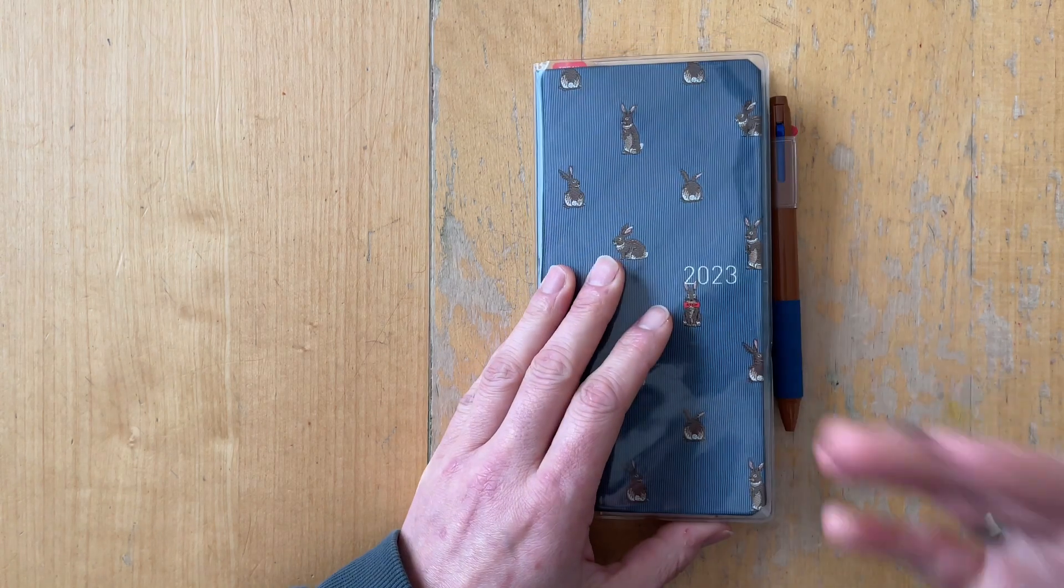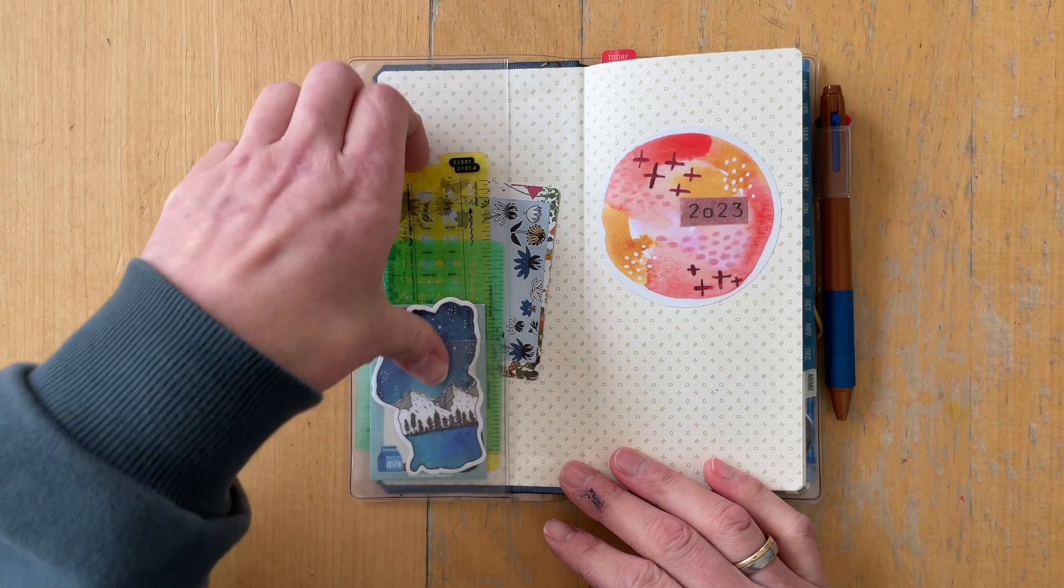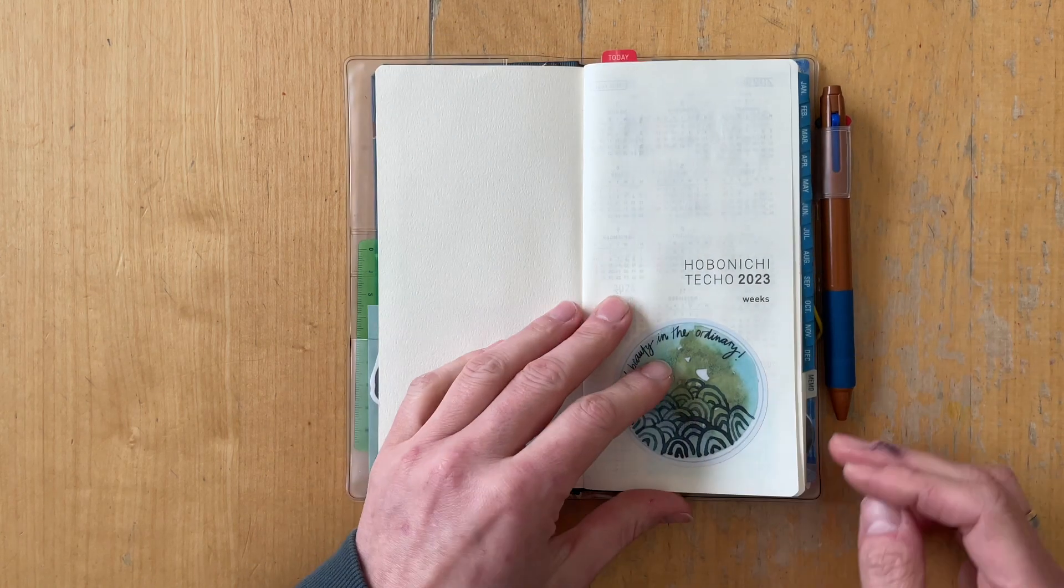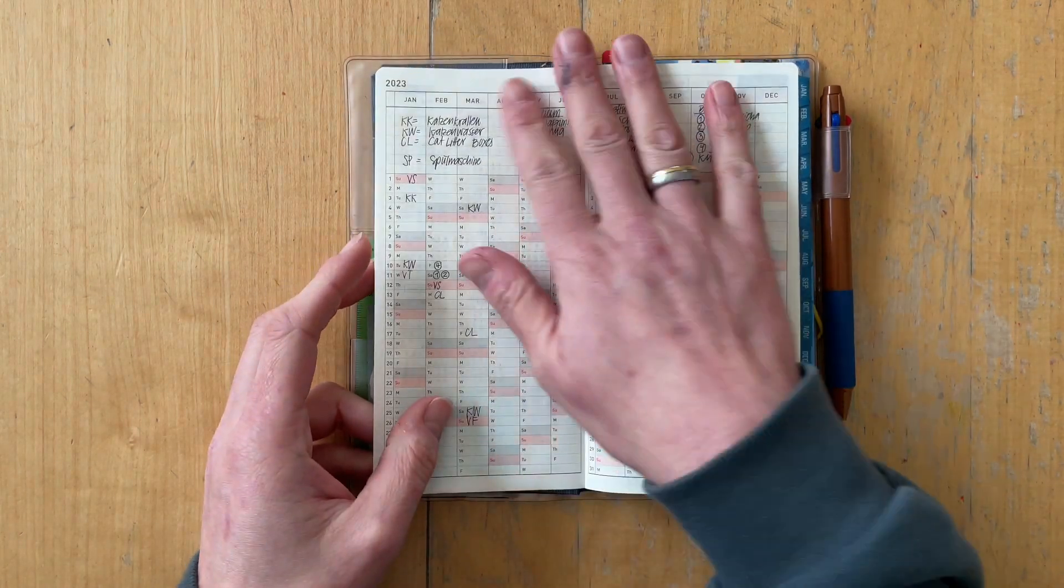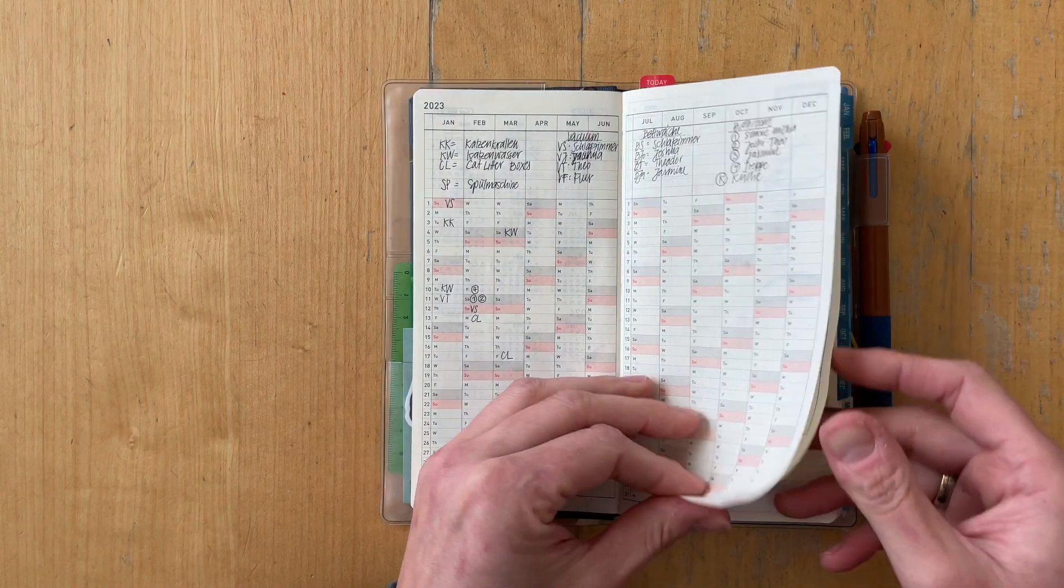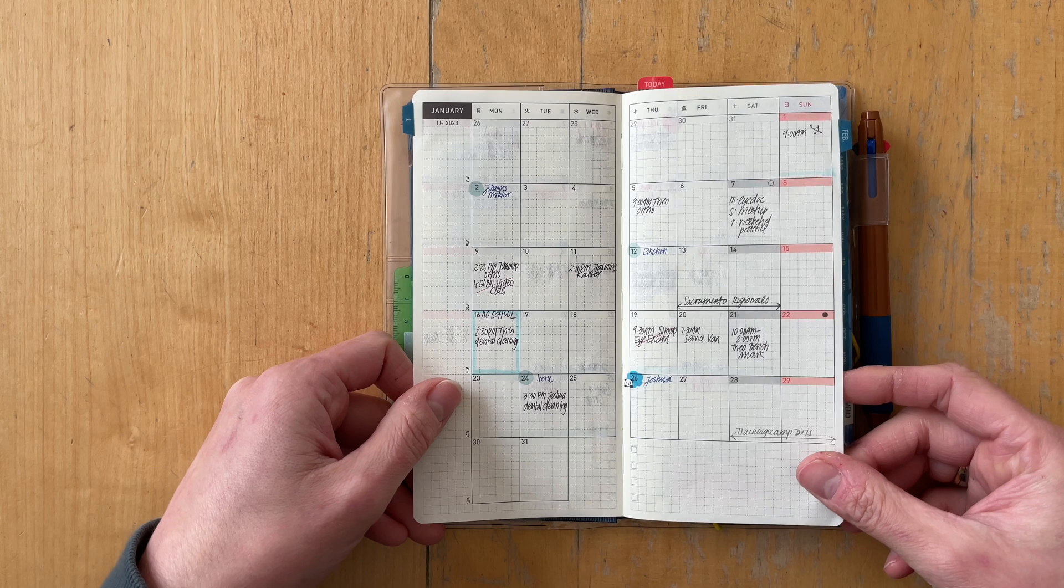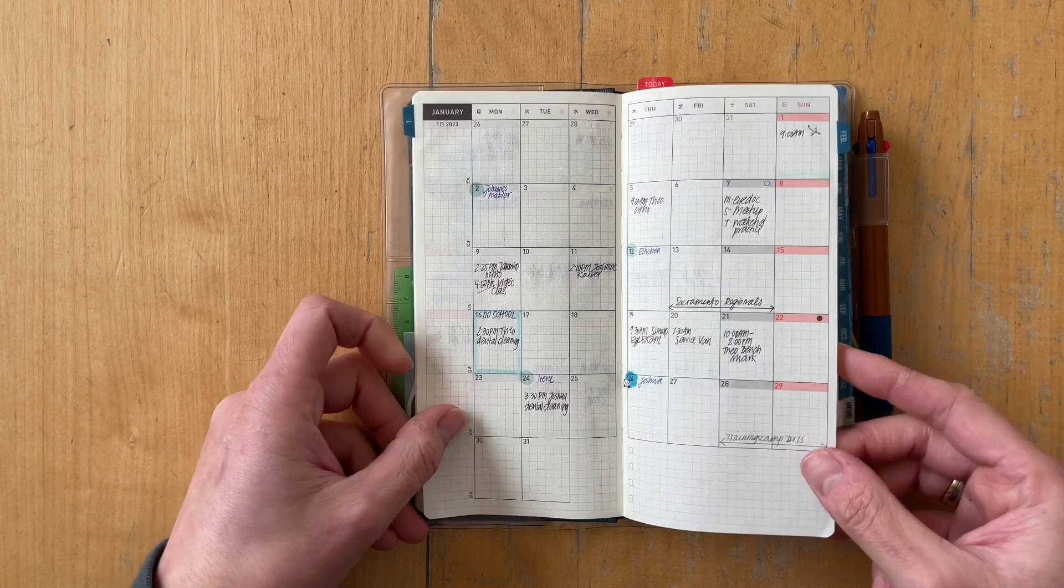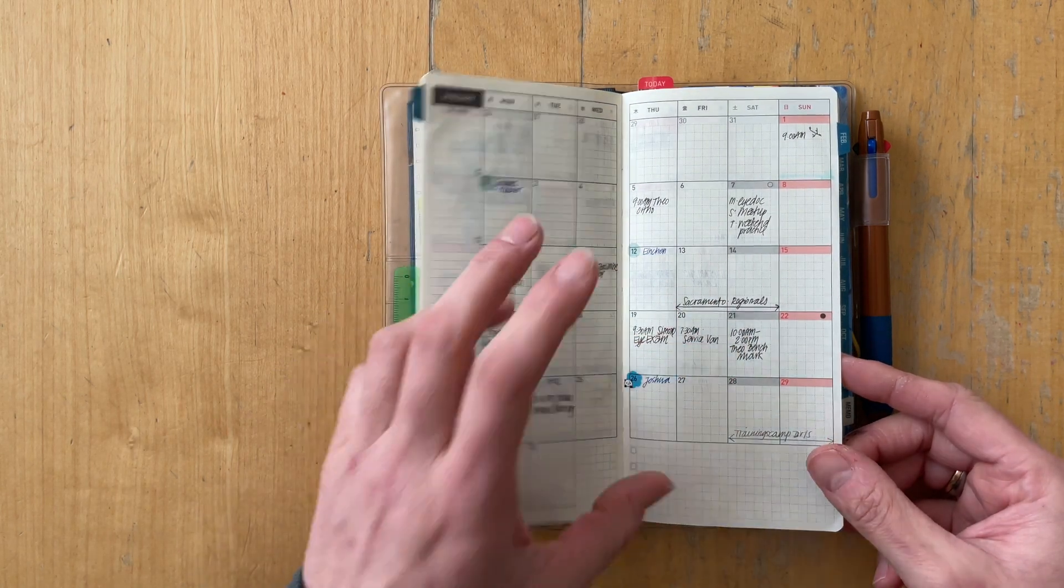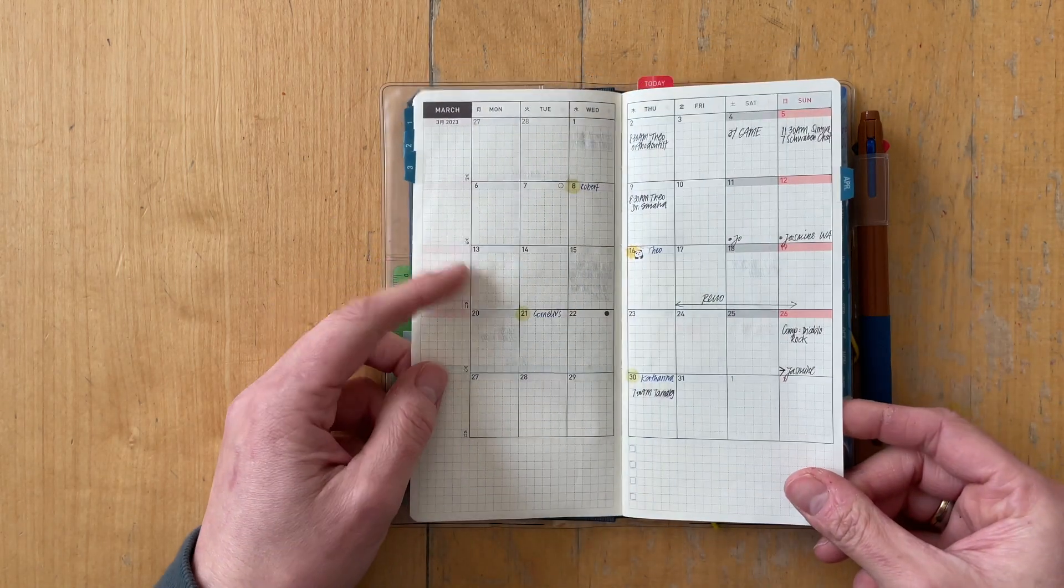Then the main thing that I use is this Hobonichi Weeks. It is still basically the same as it was when I last shared it. I have some sticky notes and rulers in the front. On this page here, I'm keeping a task tracker. The monthlies are used for birthdays, time off, vacations, appointments, anything that is out of routine, so that I can get a big picture of what is happening in the month.